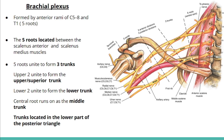Five roots unite to form three trunks. The upper two unite to form the superior or upper trunk. The lower two unite to form the lower trunk, and the central root runs as the middle trunk. The trunks are located in the lower part of the posterior triangle of the neck.